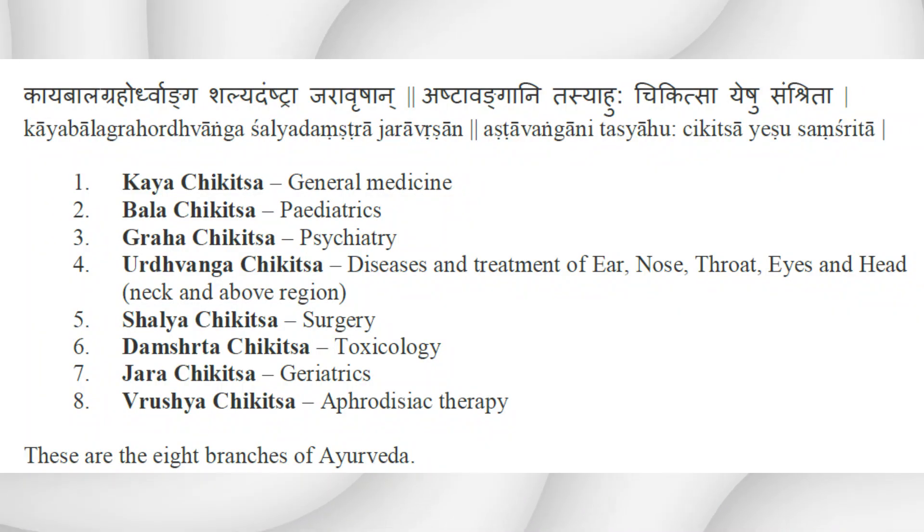Let's get into the basics of Ayurveda. There are eight branches. Kaya Chikitsa, which is a pseudoscientific version of general medicine. Bala Chikitsa is pediatrics. Bhutavidya or Graha Chikitsa is psychiatry — note the words 'Bhut' and 'Graha' here, which indicates how they considered psychiatric diseases were caused. Urdhvanga Chikitsa, also known as Shalakya Tantra, covers diseases and treatment of the ear, nose, throat, eyes and head. Shalya Chikitsa is surgery.